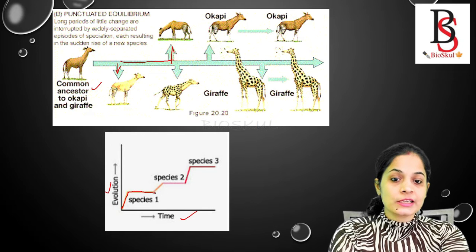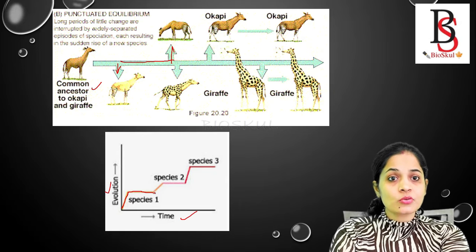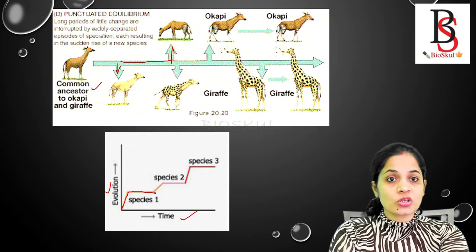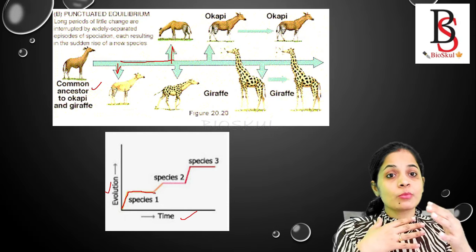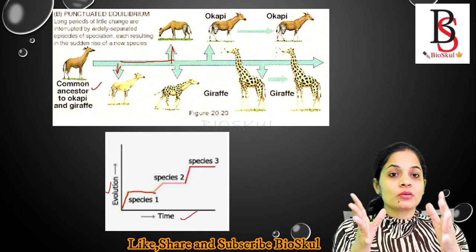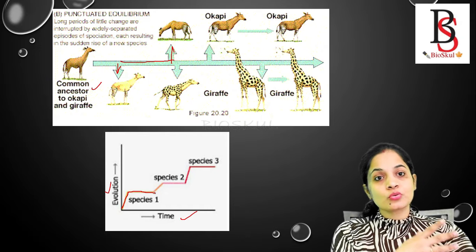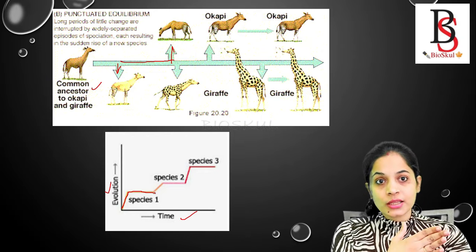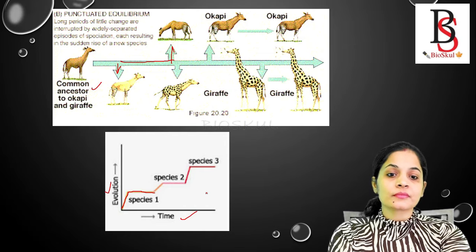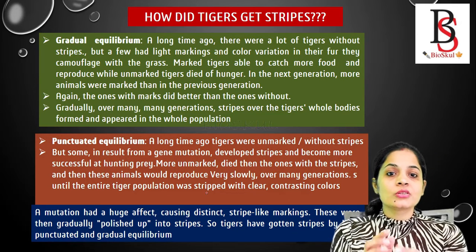The huge change occurs because of mutation or changes in environmental conditions. When the environmental condition changes, one group of organisms adapts to the new condition and develops into a new species. So this is about punctuated equilibrium.